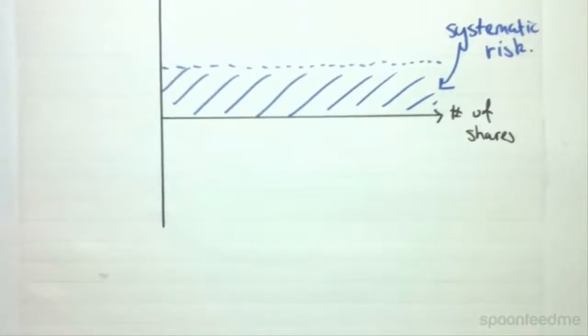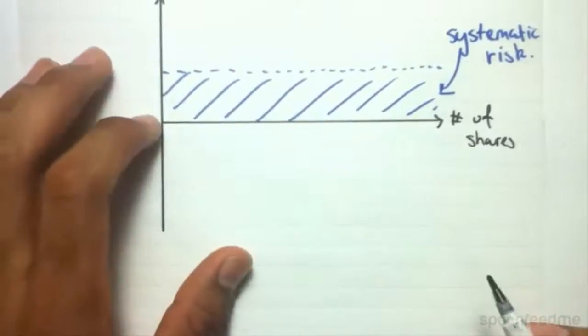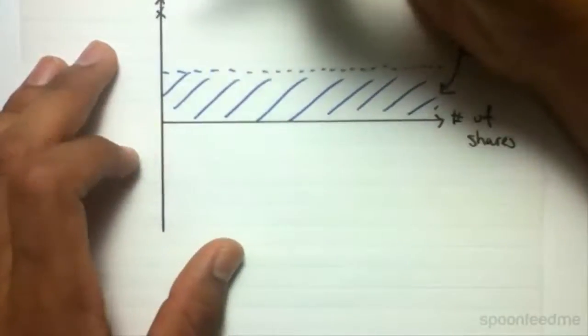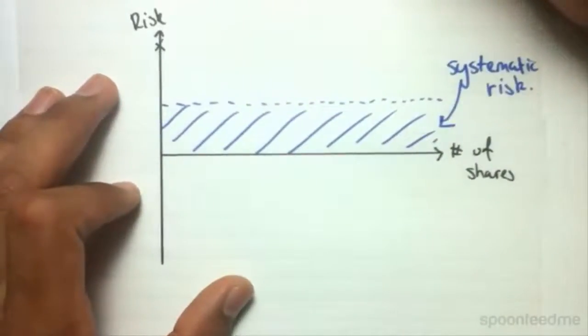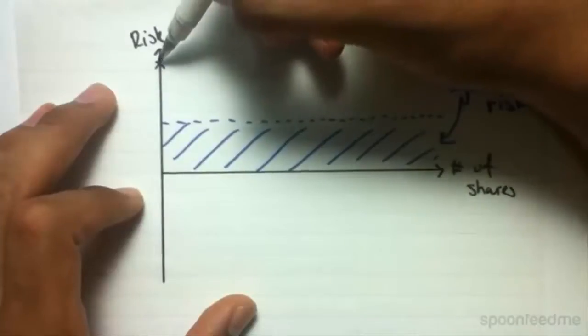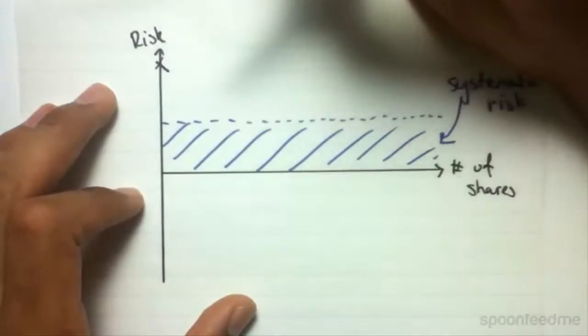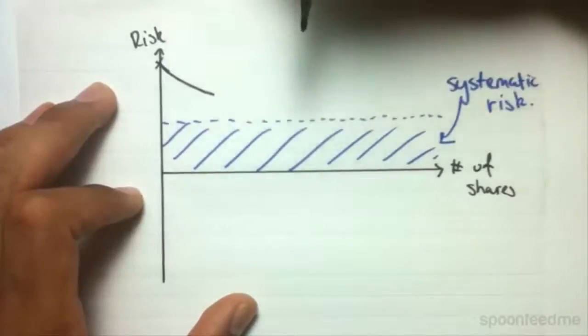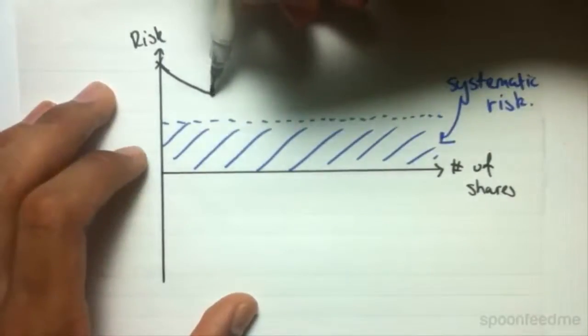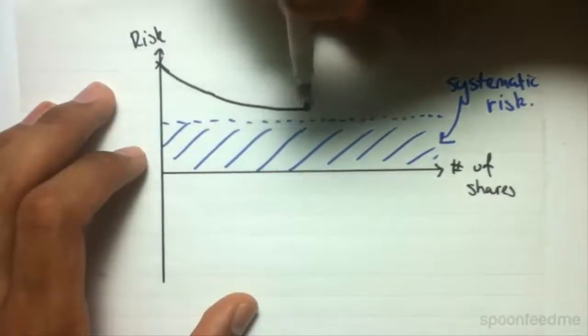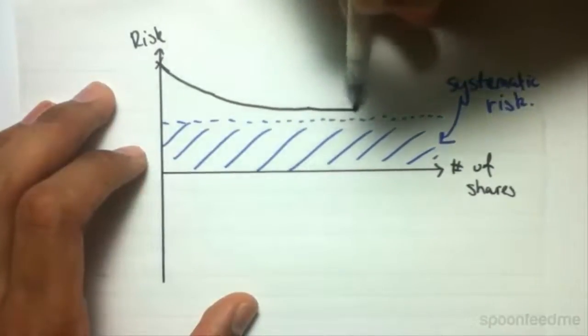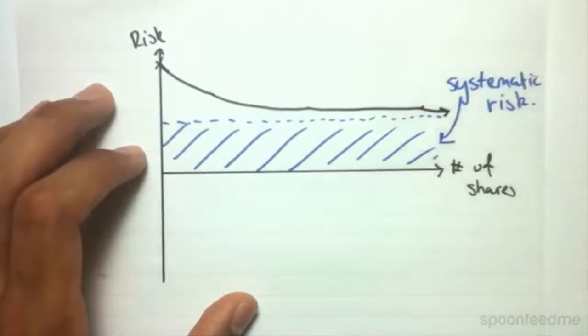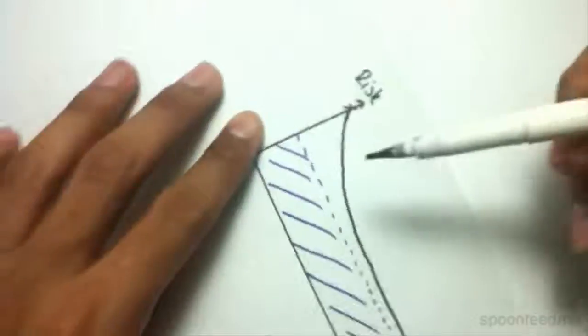But I'll get my other pen, the black one, and I'm going to show you that unsystematic risk will experience a reduction. So let's say we start at this point here. We have unsystematic risk here, but as the number of shares increase, my unsystematic risk will decrease.